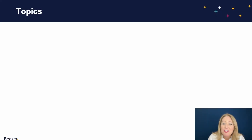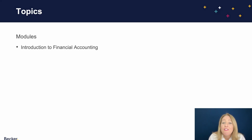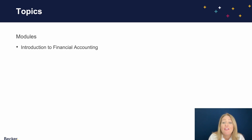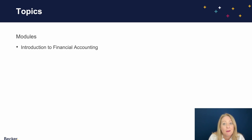The course is structured into five comprehensive modules designed to help you build a solid foundation. The first module offers a refresher on the basics of financial accounting, including its role, users, the FASB conceptual framework, the accounting equation, and the four basic financial statements. We'll also explore how different transactions impact both the accounting equation and the financial statements, highlighting how these statements work together to provide meaningful information.